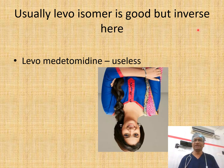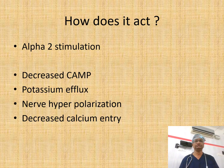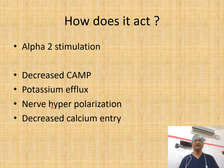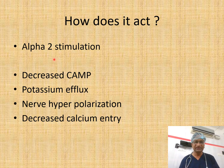Usually the levo-isomer is favored, but in this case levo-medetomidine is useless. Only dextro-medetomidine is useful. It acts as an alpha-2 agonist, causing decreased cAMP, potassium efflux, nerve hyperpolarization, and decreased calcium entry. Nerve hyperpolarization by decreased cAMP and potassium efflux is the basic mechanism behind alpha-2 agonists.